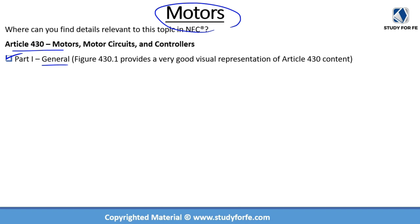Part 1 is titled General. It contains general code requirements for motors. Within Part 1, on the very first page, we have Figure 430.1, which provides a very good visual representation of Article 430 content. It's basically a diagram showing the motor feeder, short circuit and ground fault protection, motor disconnect means, and so on, cross-referencing other sections within the article. It's a very good visual representation and provides a very good overview.